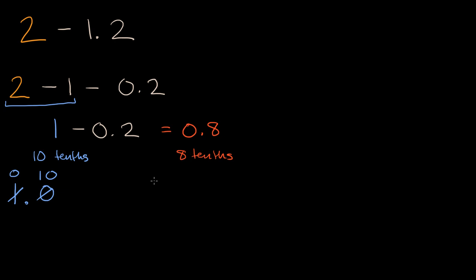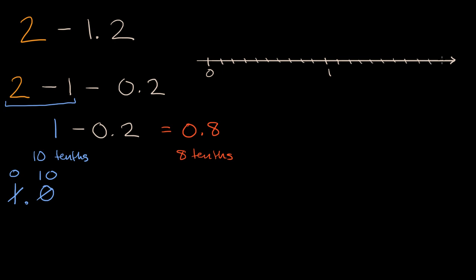We can also visualize this on a number line. Drawing a number line from zero to two, we are starting at two and subtracting one and two-tenths. One way to think about it is we first subtracted one, and then we subtracted two-tenths, and that got us to the point eight-tenths on the number line.